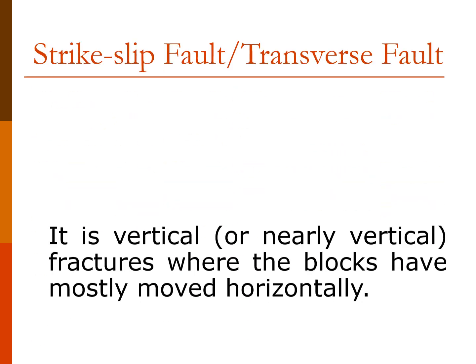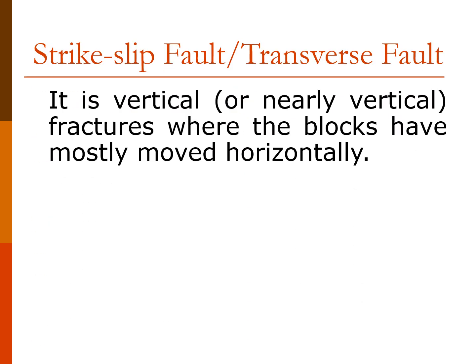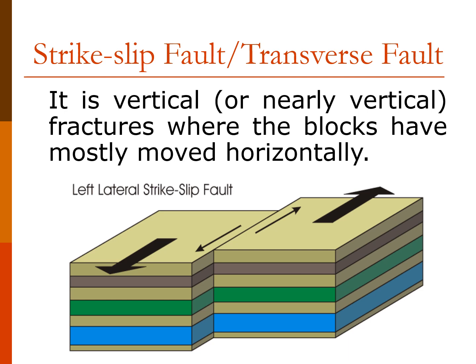The third type is a strike-slip fault, also called a transverse fault. Unlike the reverse and normal faults, this one has no diagonal crack — it has two parallel rock layers. The movement is in opposite directions: one side moves to the left and the other moves to the right. That is what we mean by strike-slip or transverse fault.